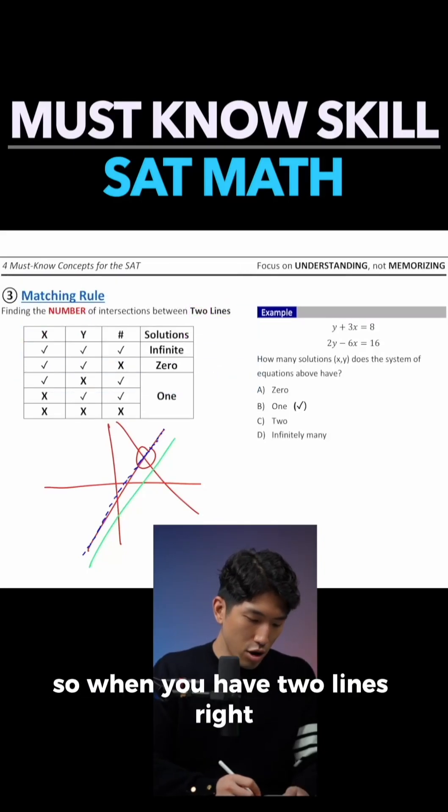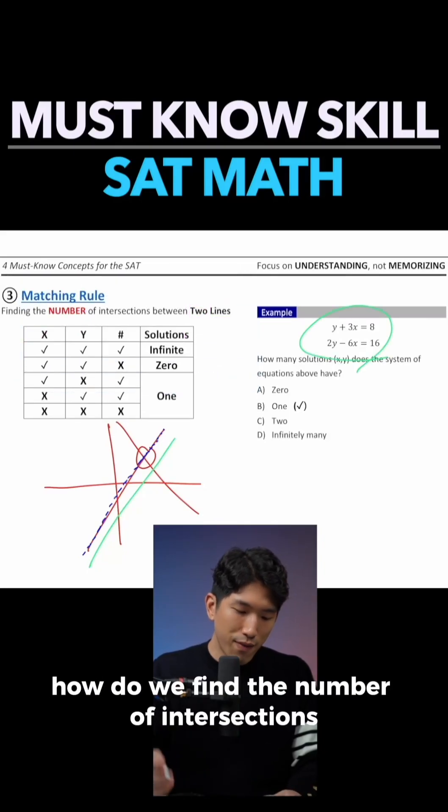Here's how the matching rule works. When you have two lines, how do we find the number of intersections?